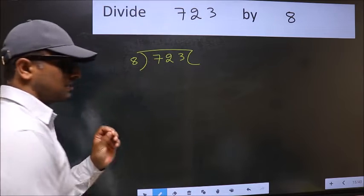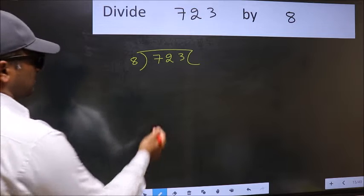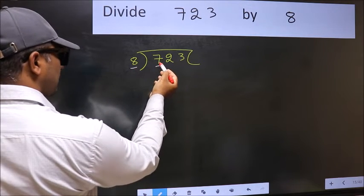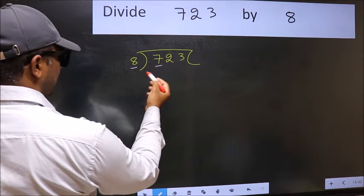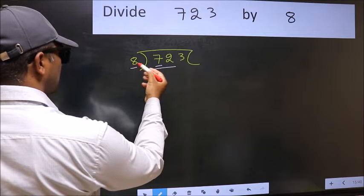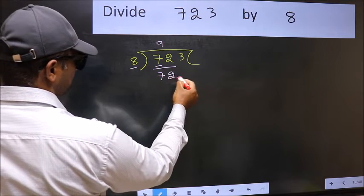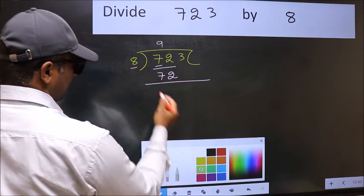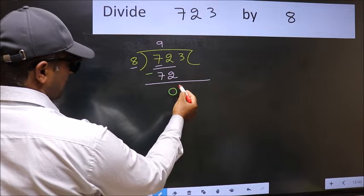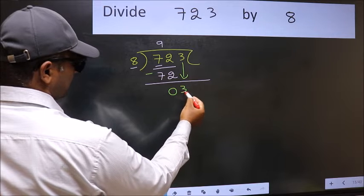This is your step 1. Here we have 7 and here 8. 7 is smaller than 8, so we should take two numbers: 72. When do we get 72 in the 8 table? 8 nines, 72. Now we should subtract. 72 minus 72 is 0. After this, bring down the beside number. So, 3 down.